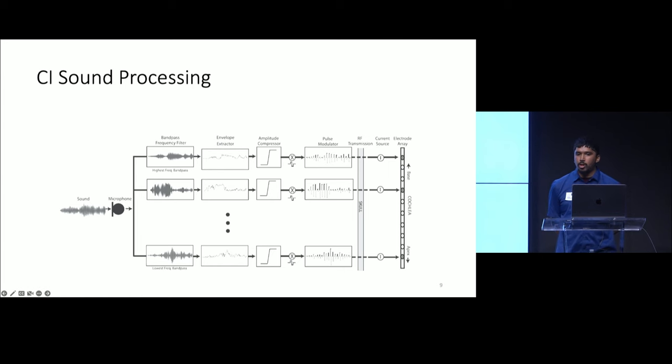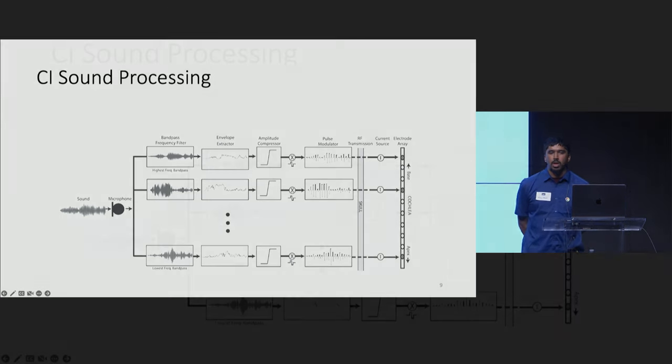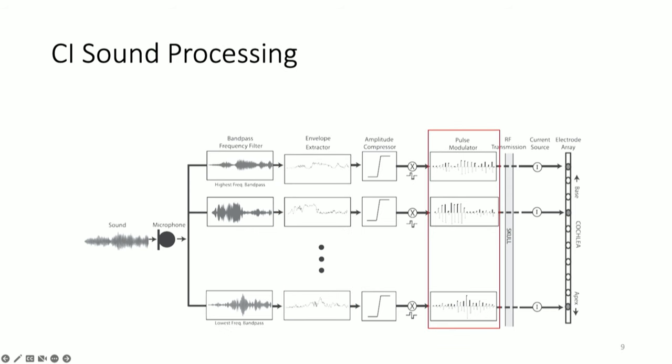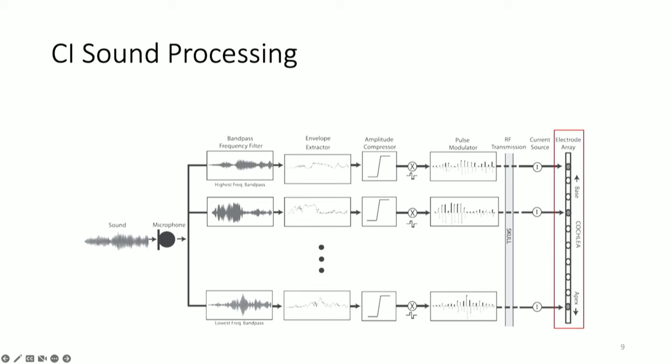Let's take a deeper dive into the signal processing implemented in the CI sound processor. After sound is captured by the microphones, it's split up into a fixed number of frequency bands. The envelopes of each band are extracted and used to modulate pulses, which are delivered along the electrode array. This kind of processing is equivalent to a channel vocoder, which is why vocoders are commonly used for CI simulations. A high-rate carrier signal, usually around 1,000 pulses per second, is typically used, serving merely as a way of sampling the envelope modulations with high fidelity. During envelope extraction, fine structure information within each frequency band is discarded, and this has negative consequences for speech, noise, and music perception.